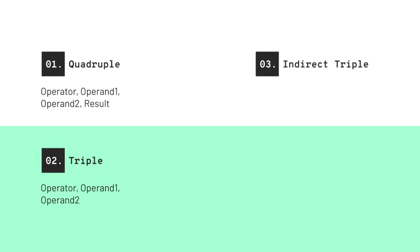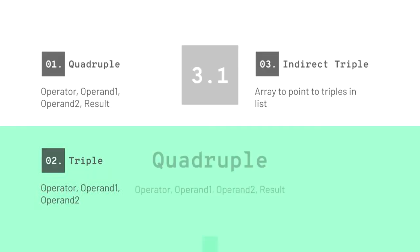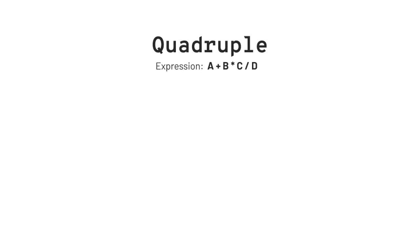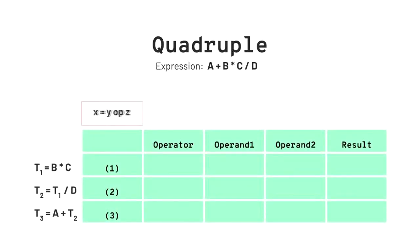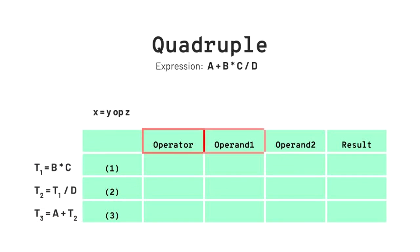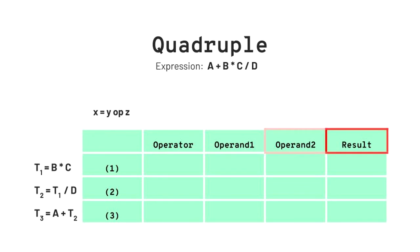The first is a quadruple with four fields, the second is a triple with three fields, and the third is an indirect triple with three fields and a pointer. In the quadruple representation, we start with the same expression: a + b * c / d. On the screen, we see the usual three address code representation x = y op z, and a table with fields: operator, operand1, operand2, and result.